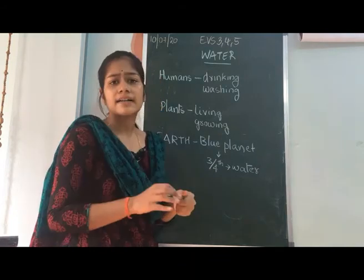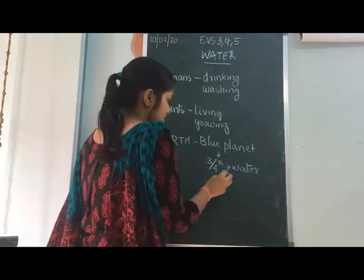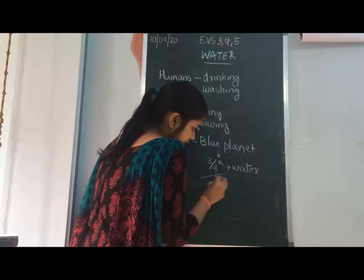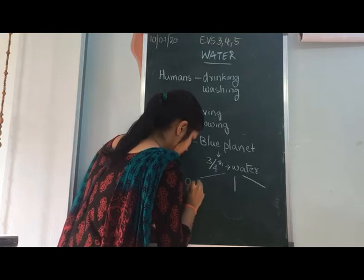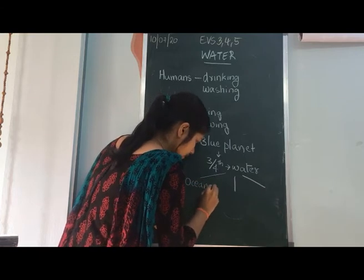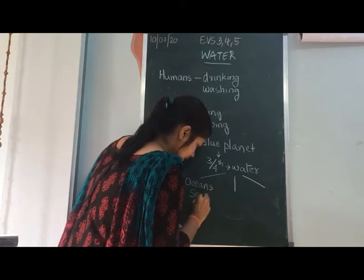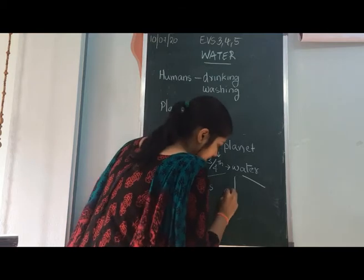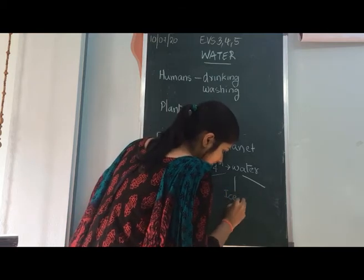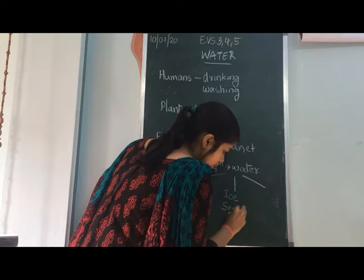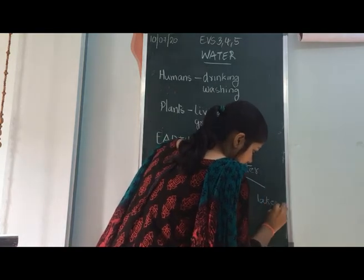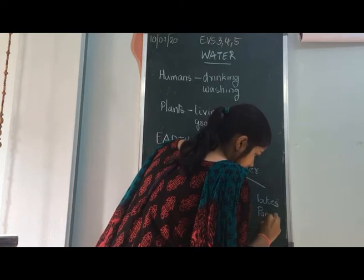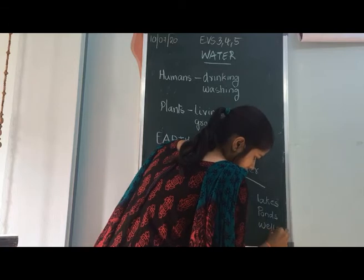Water occurs in many ways. This three-fourths of water occurs in three forms: either in oceans and seas, or in ice and snow, or in lakes, ponds, wells, and rivers.